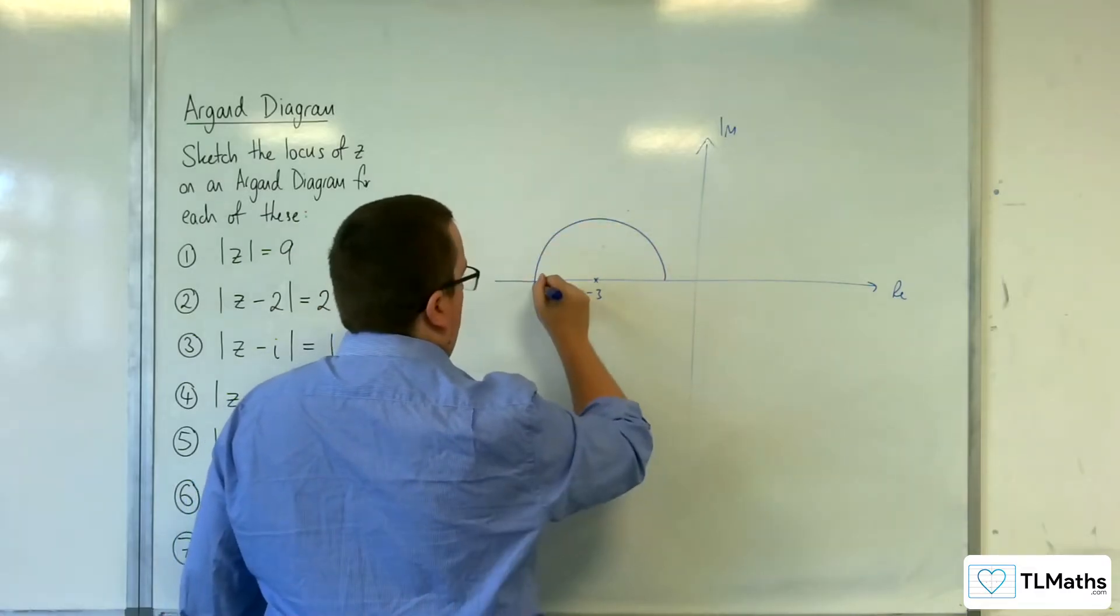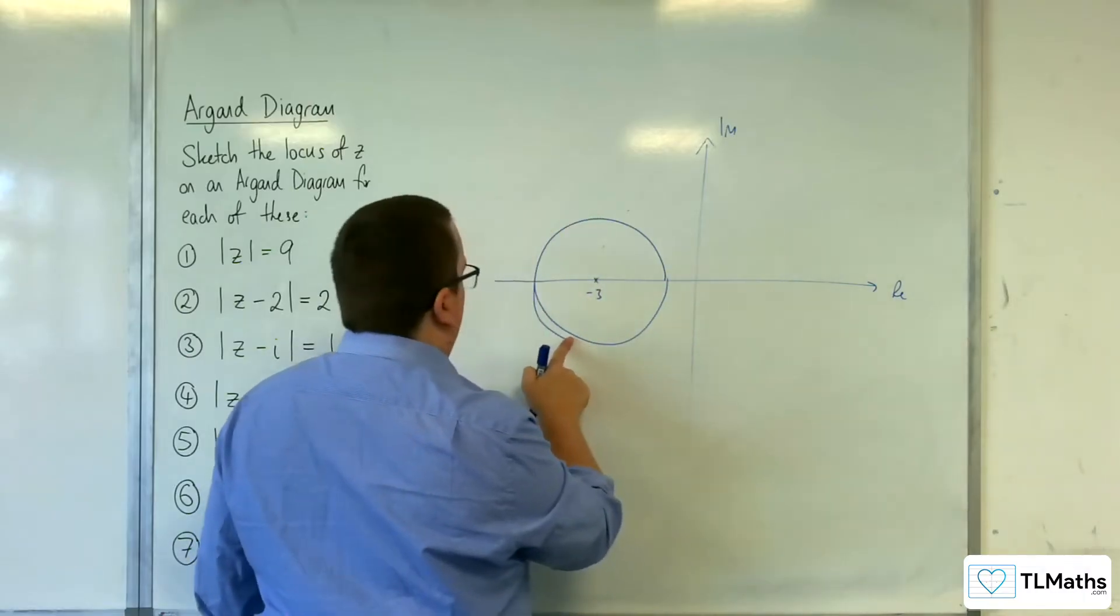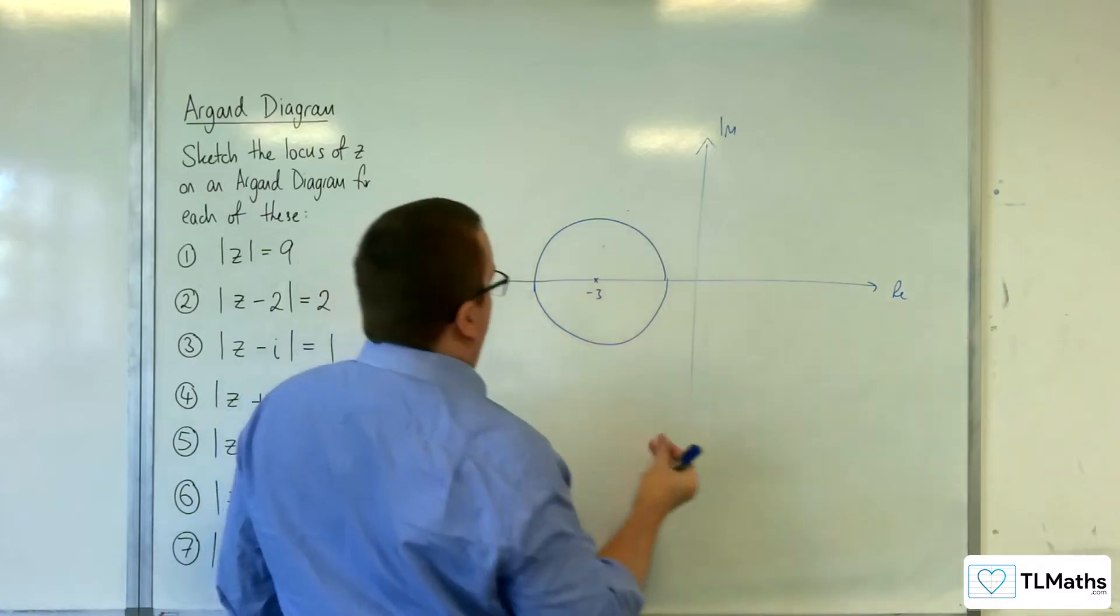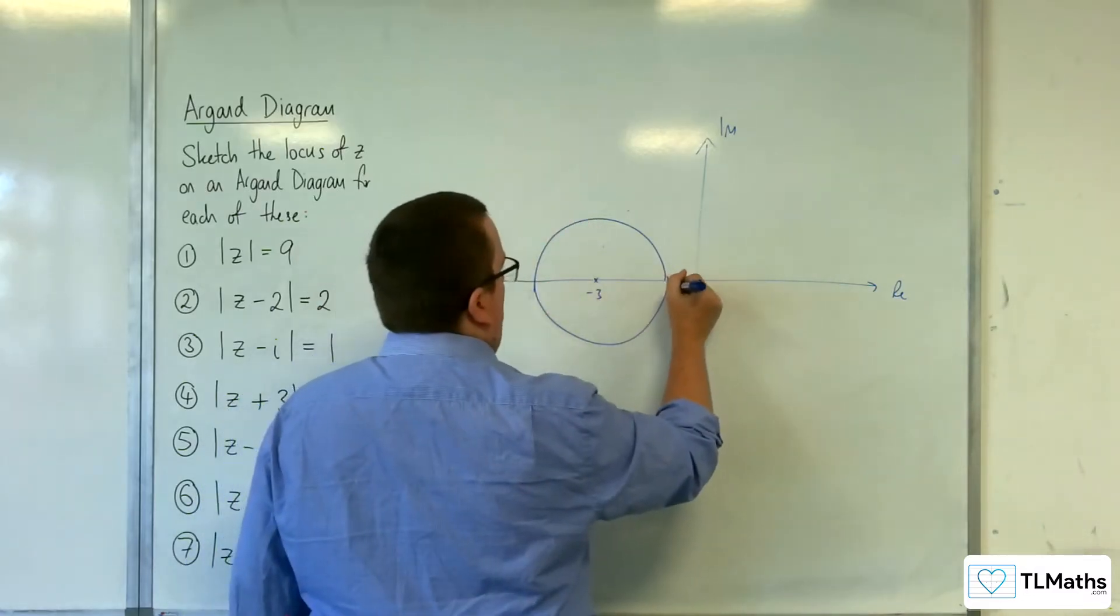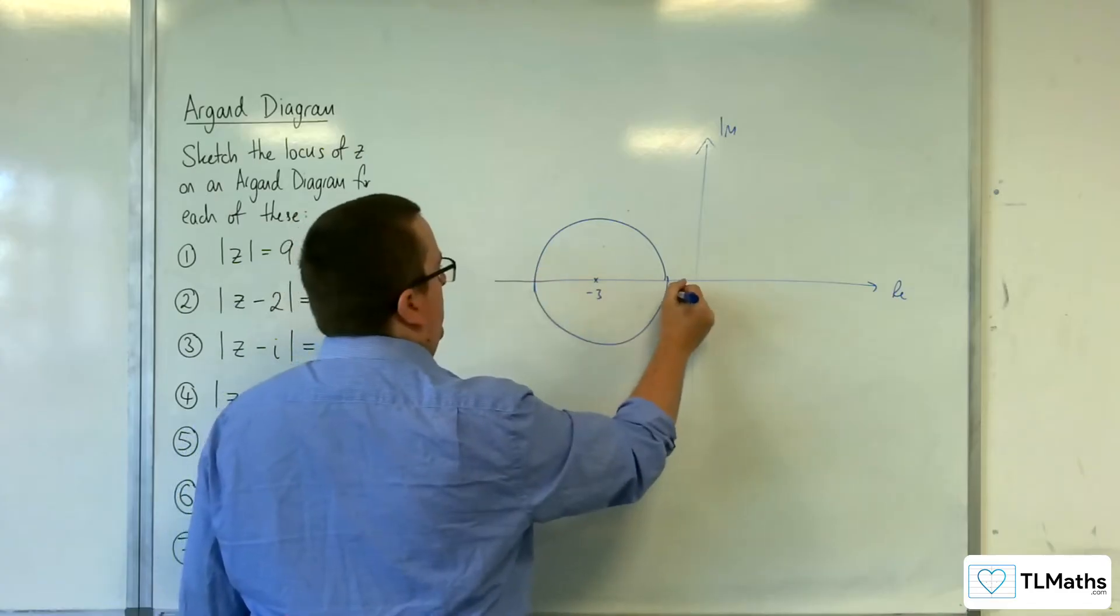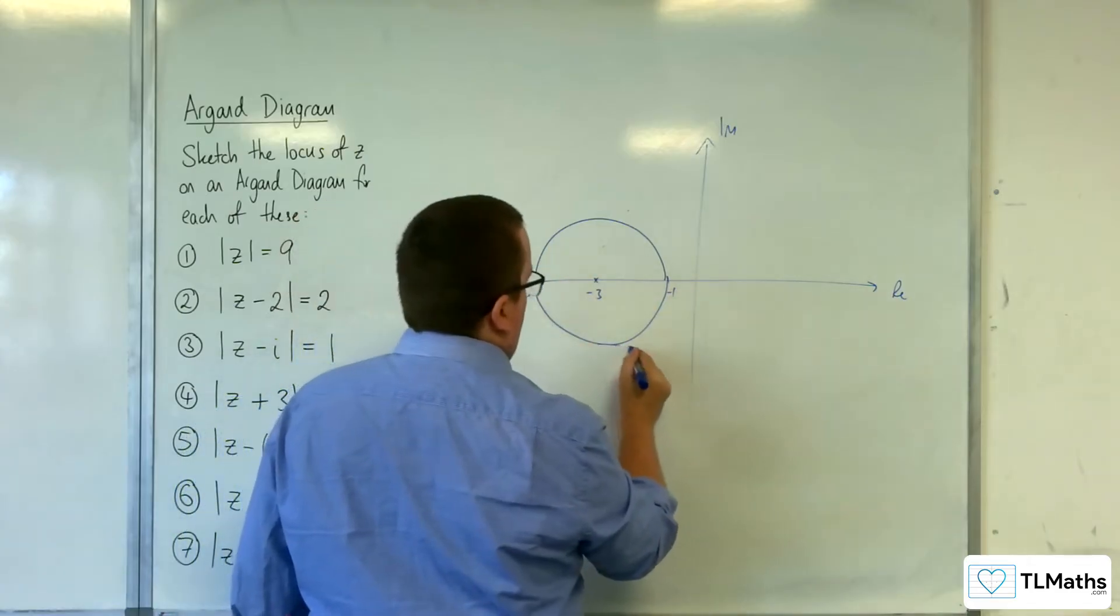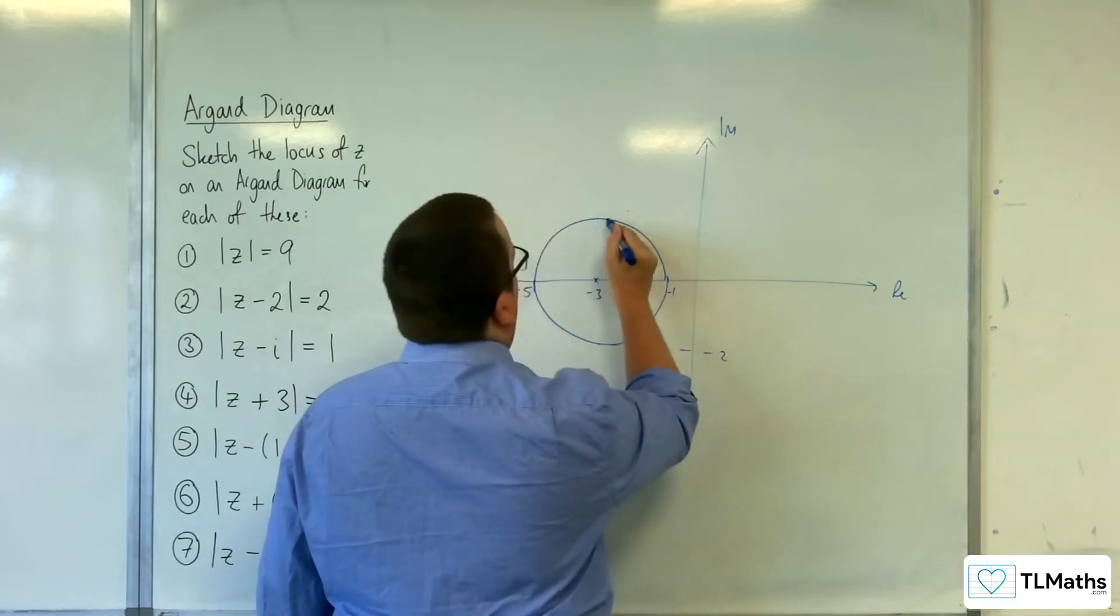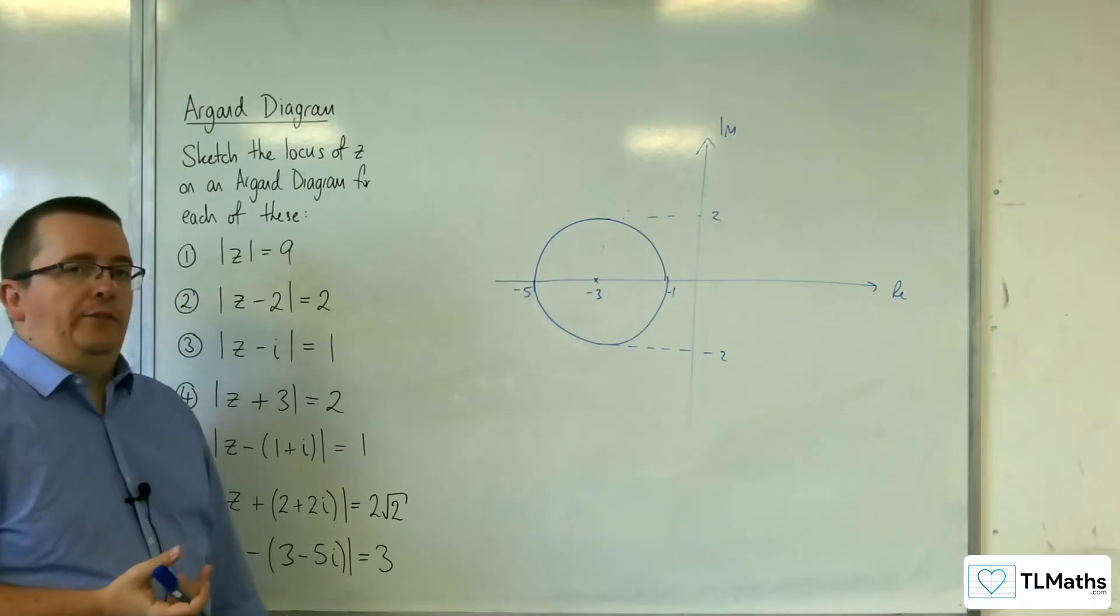A bit dumpy there. I don't think my circle looks particularly good. Oh well, as long as it's circular shape. Right, that's minus 1, and that's going to be minus 5. And that's lowest point, minus 2. And that's 2. And so that's what my circle would look like.